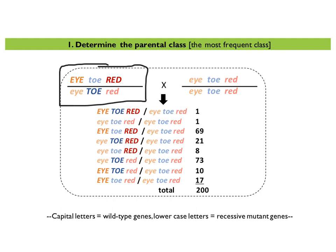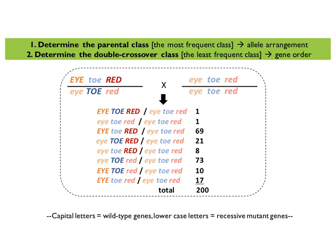Here I've rewritten the genotype of the heterozygous parent to reflect the allele arrangement that we deduced by examining the progeny from the three-point test cross. What we have to do next is determine the double-crossover class. The double-crossover class is the least-frequent class.